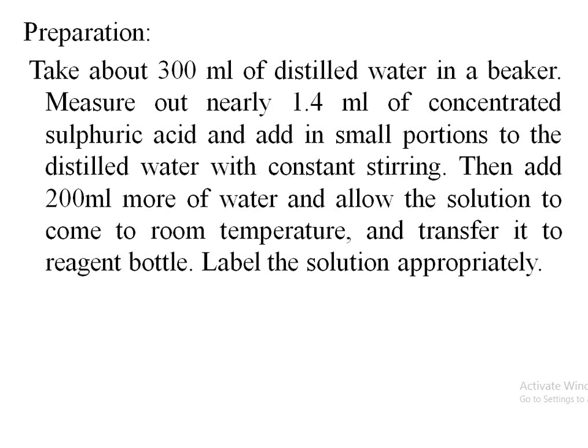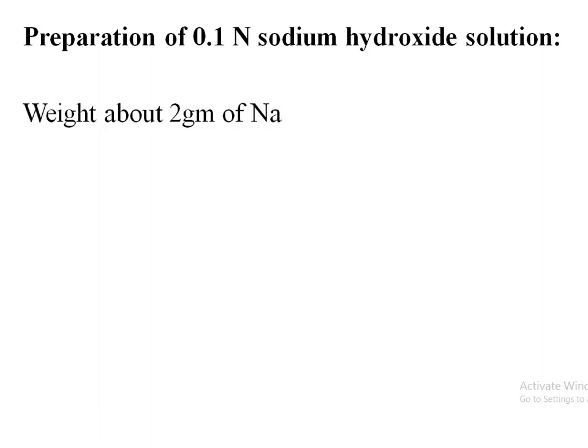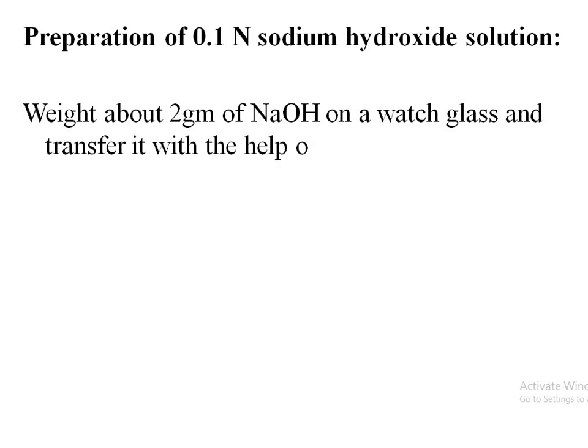Label the solution appropriately — the amount is 1.4 ml. For the calculation part, watch the previous video. Next is the preparation of 0.1 normal sodium hydroxide solution. We are standardizing sulfuric acid with sodium hydroxide, which is why we need 0.1 normal sodium hydroxide solution as well.